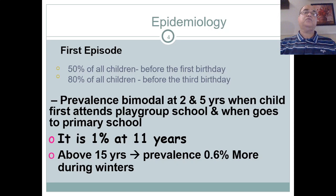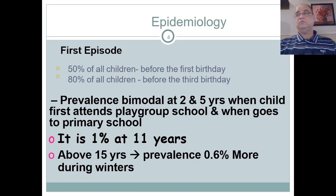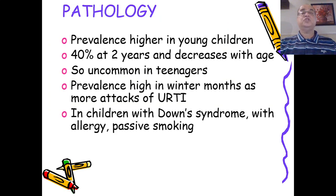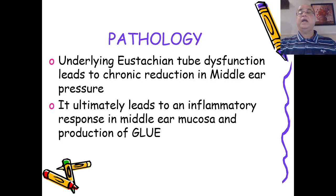The first episode is seen in 50 percent of all children before their first birthday and 80 percent before their third birthday. Prevalence is bimodal — at early infancy and when children start school, where they are exposed to other children of the same age group and experience more upper respiratory tract infections. Prevalence is 1 percent at 11 years and only 0.6 percent at 15 years and above. It is high in winter, in children with craniofacial abnormalities like Down syndrome, in those with allergies, and in those exposed to passive smoking.